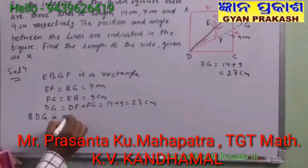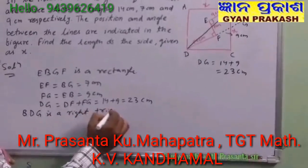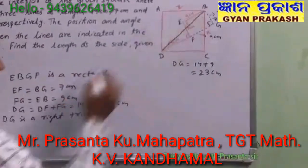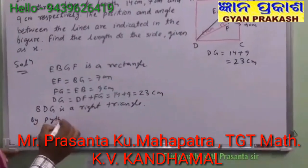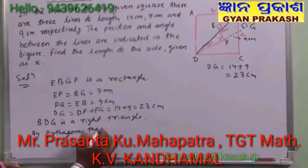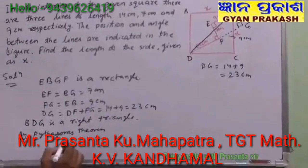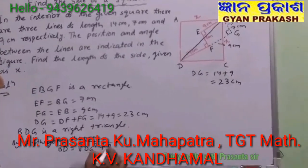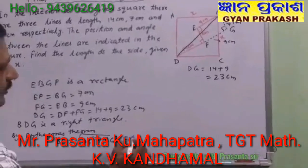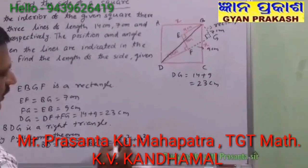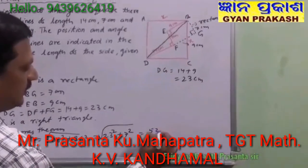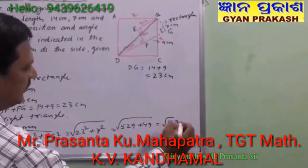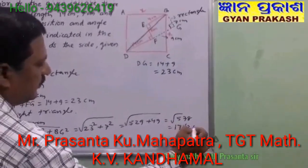By applying the Pythagorean theorem, BD equals the square root of DG squared plus BG squared. That is the square root of 23 squared plus 7 squared, which equals the square root of 529 plus 49, equal to the square root of 578, and that gives us 17√2 cm.